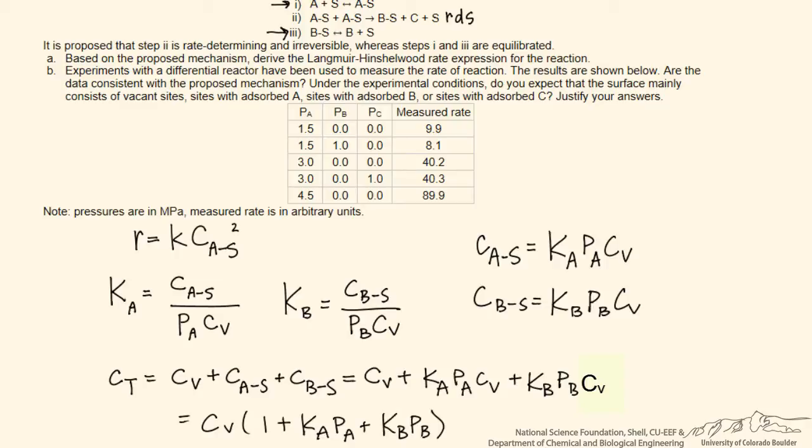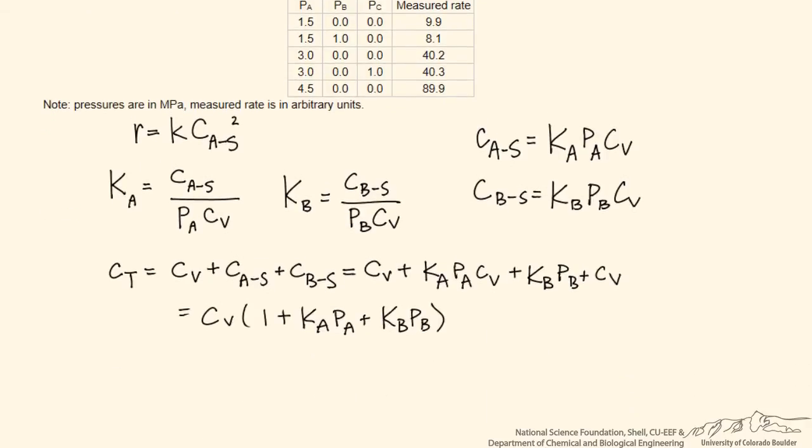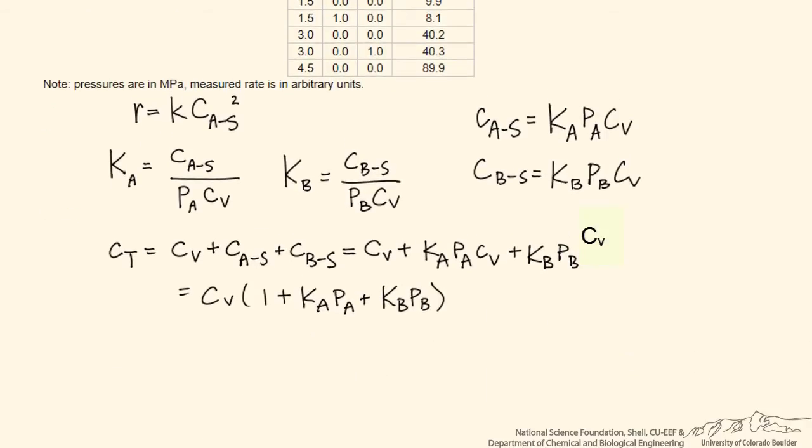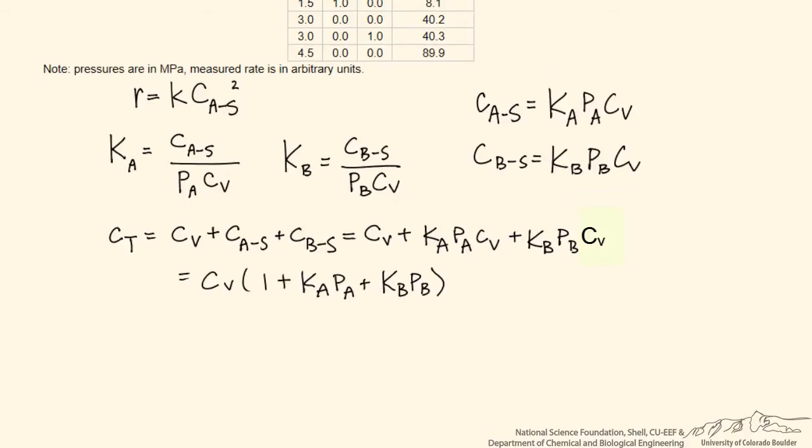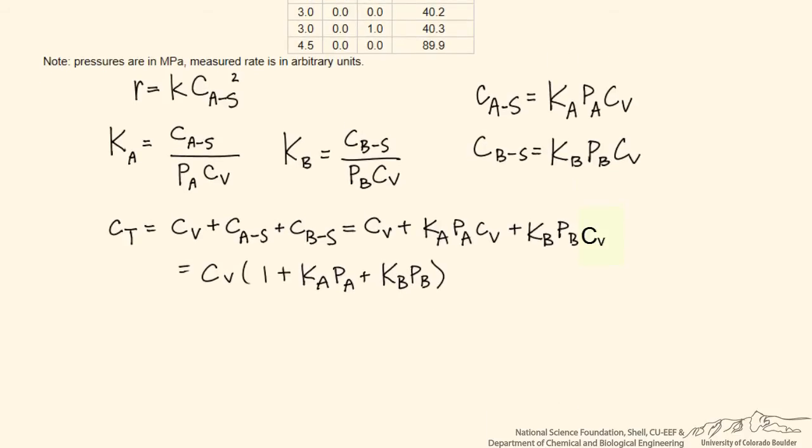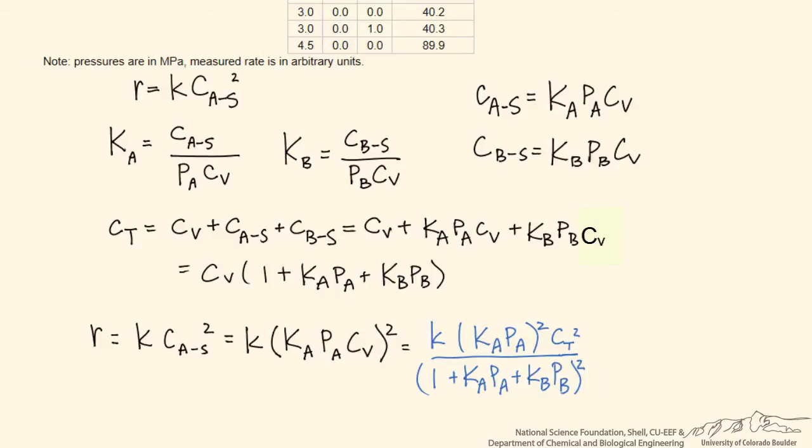Now we can go back to our original rate expression and write it in terms of CA-S. We've related the concentration of A-S to the concentration of vacant sites, and we've already determined the concentration of vacant sites from this expression in terms of the total concentration of sites.